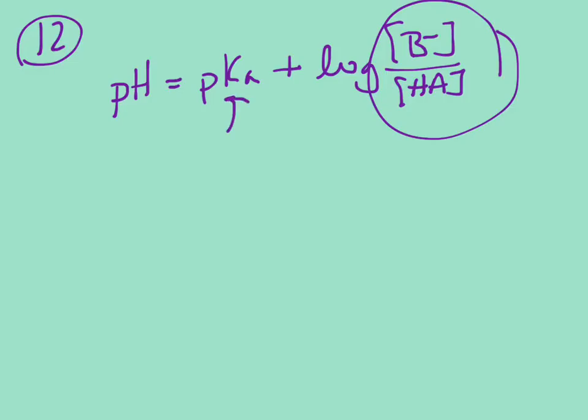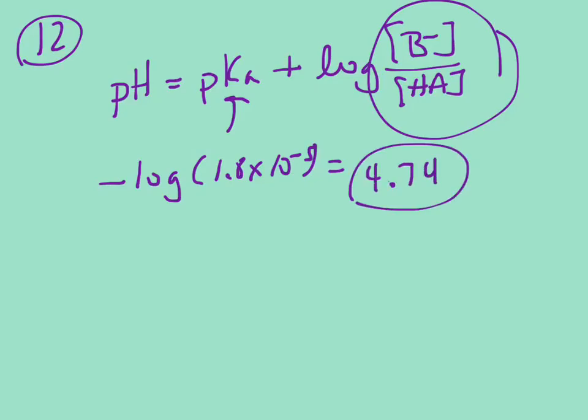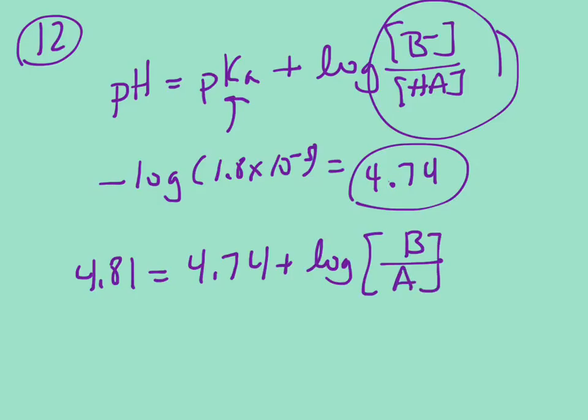So if you plug in and get the negative log of the Ka, which is 1.8 times 10 to the negative fifth, then you're going to get that the pKa is equal to 4.74. And you may recognize that number because we've used it a lot. So we want a pH of 4.81, and that's going to be equal to the 4.74 plus the log of the concentration of the base over the acid.